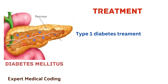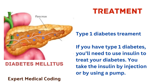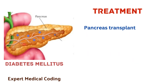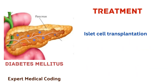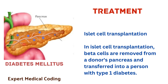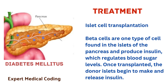Type 1 diabetes treatment: if you have type 1 diabetes, you will need to use insulin to treat your diabetes. You take the insulin by injection or by using a pump. The next treatment is pancreas transplant, a surgical procedure to place a healthy pancreas from a deceased donor into a person whose pancreas no longer functions properly. The next treatment option is islet cell transplantation. In islet cell transplantation, beta cells are removed from a donor's pancreas and transferred into a person with type 1 diabetes. Beta cells are one type of cell found in the islets of the pancreas and produce insulin, which regulates blood sugar levels. Once transplanted, the donor islet begins to make and release insulin.